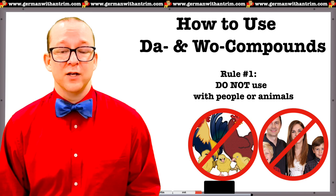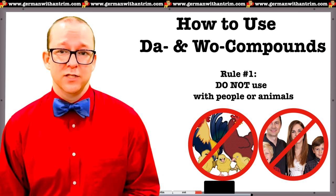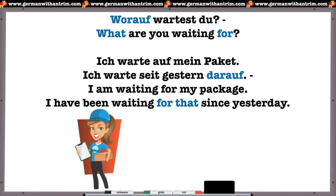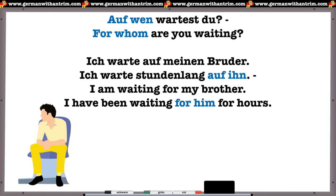There are a few things to keep in mind. Number one: these compounds are not used for people or animals. It's fine to use them with inanimate objects, but not okay for a person or animal. For example, "Worauf wartest du?" — What are you waiting for? "Ich warte auf mein Paket. Ich warte seit gestern darauf." — I'm waiting for my package. I've been waiting for that since yesterday. But for a person: "Auf wen wartest du?" — For whom are you waiting? "Ich warte auf meinen Bruder. Ich warte stundenlang auf ihn." — I'm waiting for my brother. I've been waiting for him for hours.